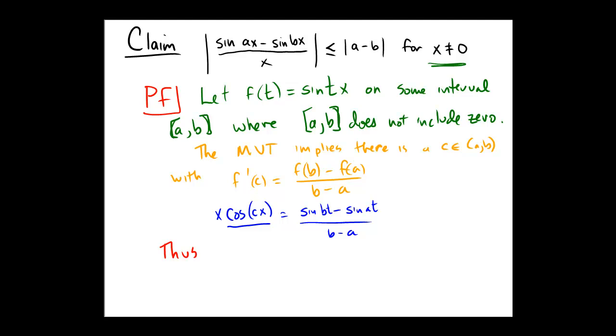Well, we'll get that the absolute value of sine bx minus sine ax over b minus a is going to be bounded by, it's going to be less than or equal to 1 times the absolute value of x.